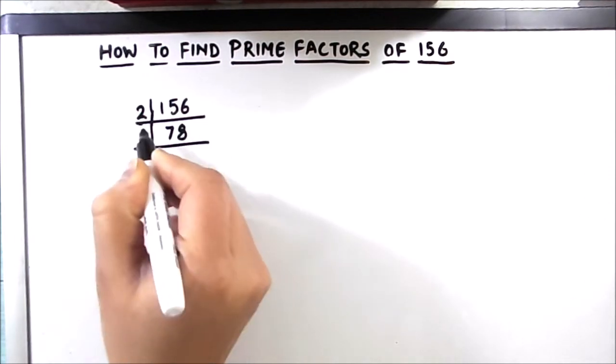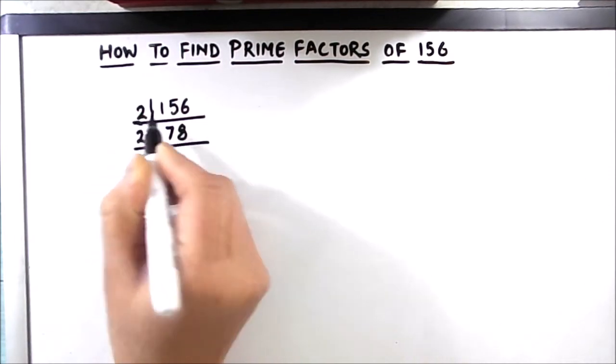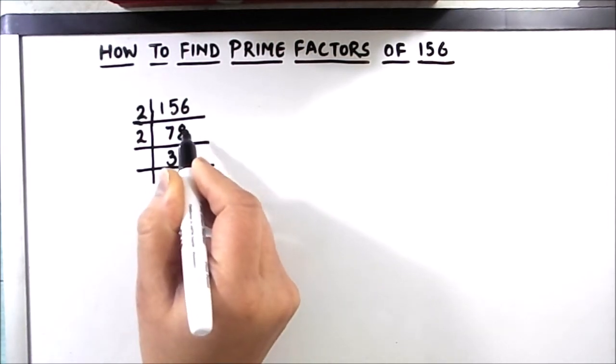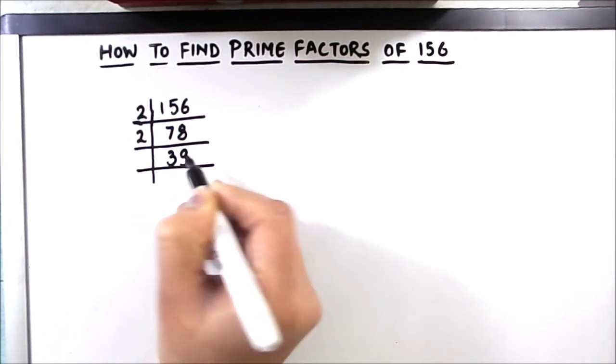Again this is even number we can divide it by 2. 2 times 3 is 6 and 1 is carried over. This becomes 18 and 2 times 9 is 18.